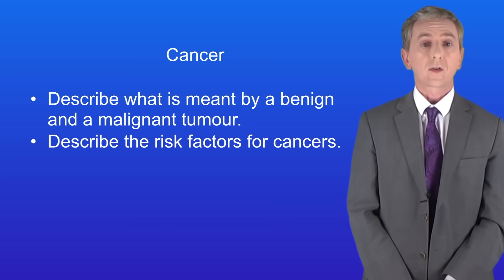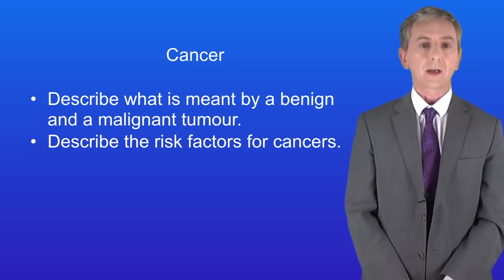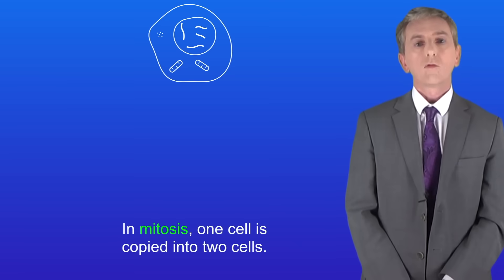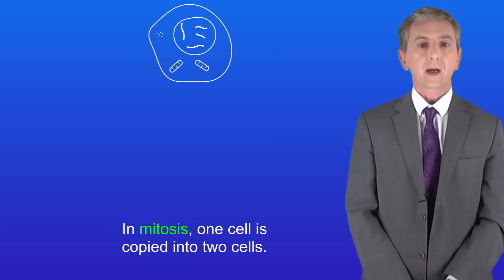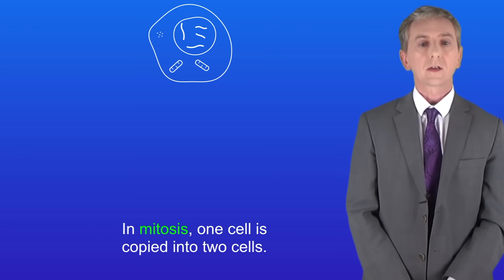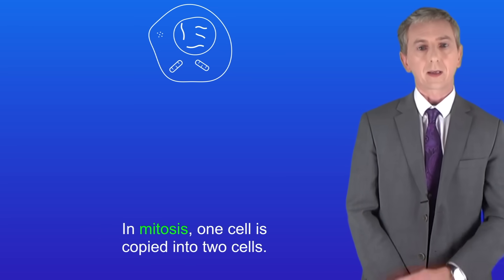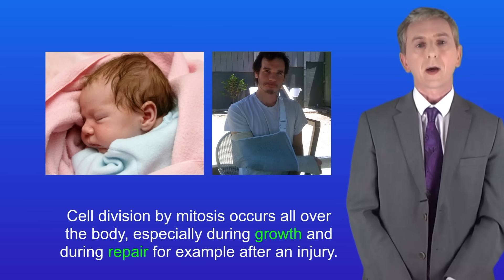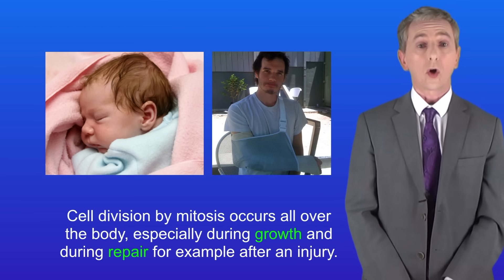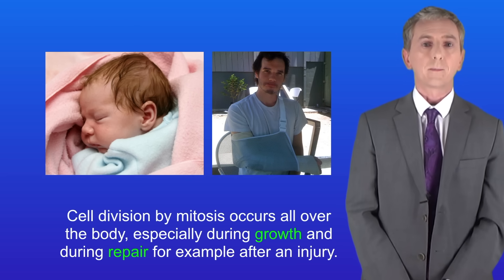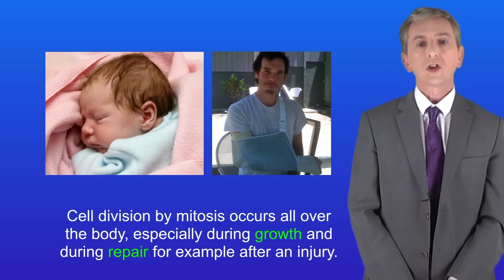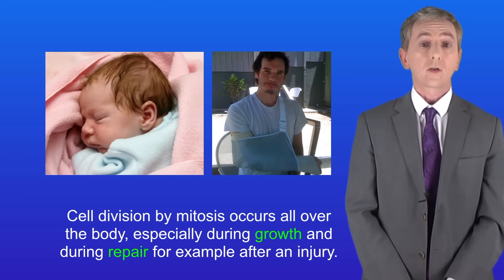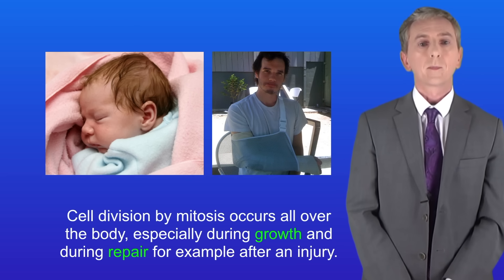In a previous video we looked at cell division by mitosis. Remember that in mitosis one cell is copied into two cells like this. Cell division by mitosis occurs all over the body, especially during growth and during repair, for example after an injury.